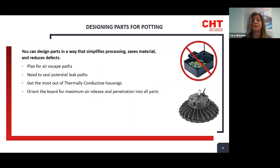Check connectors for leak paths and use sealed connectors or seal with an RTV sealant anywhere the material can escape. Get the most out of thermally conductive housing — heat will build up on the circuit board and you will need to draw that heat out. If you have heat sinks, use an RTV thermally conductive adhesive to pull the heat out. Lastly, plan how to orient parts to allow for air release and complete fill penetration. These things will help simplify processing, save material, and reduce defects.